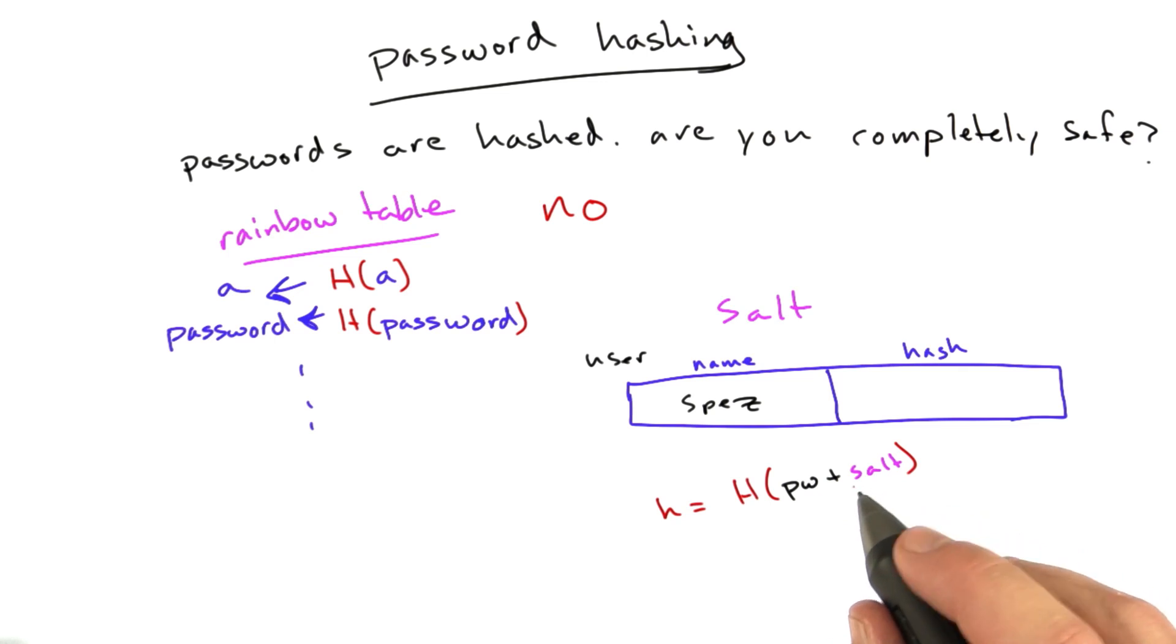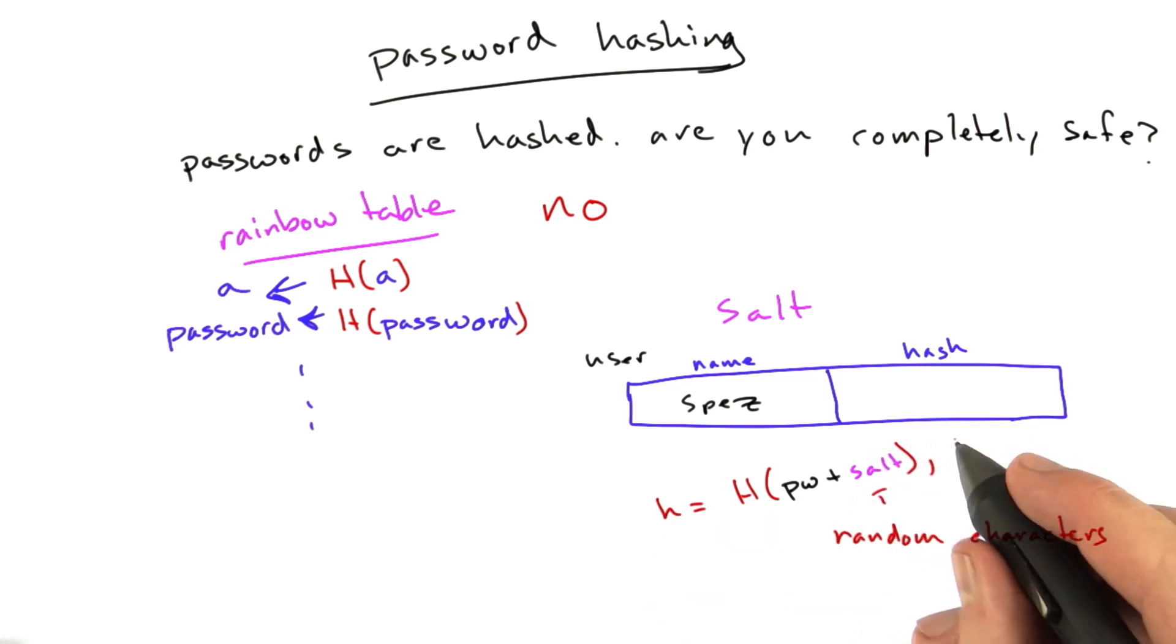This salt, so this looks very similar to what we did with the cookies, right? We were using HMAC, and we had a password and a secret. Instead, the salt is just some random characters we make up. You can make them up, and you store them in the hash field, in the clear.